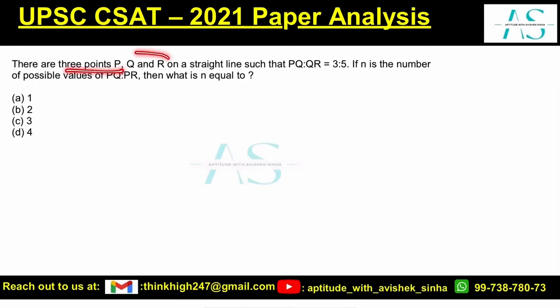There are three points P, Q, and R on a straight line. Let's draw a line. There is a constraint - the condition says PQ:QR is given as 3:5, three parts to five parts.